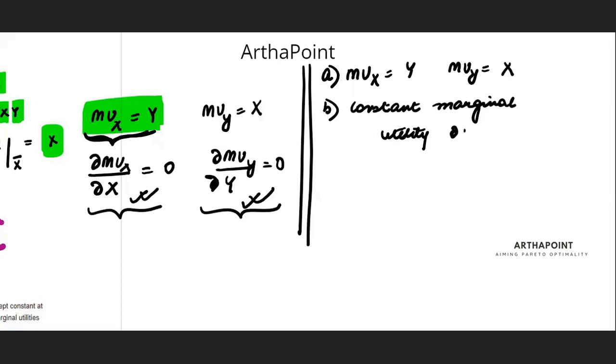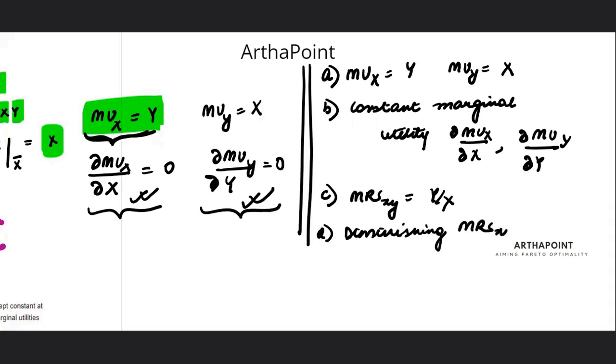How do I check this? By checking what happens to marginal utility as X changes. What happens to marginal utility as Y changes? Third, MRS XY, this is given by Y by X. And fourth and last, that you have diminishing MRS XY.